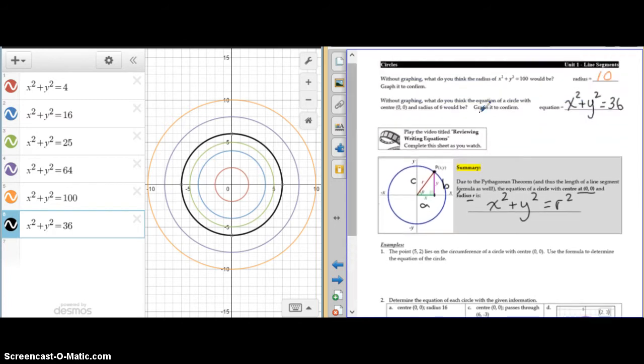So, you will get some questions, just like this one here, where they tell you what the radius is, which means you only have to square that number and put that right into the equation after the equal sign.